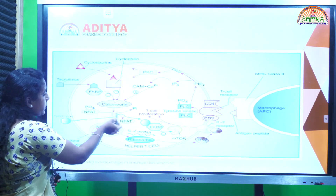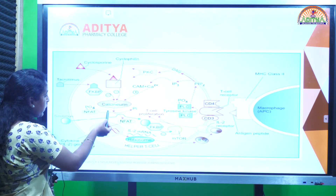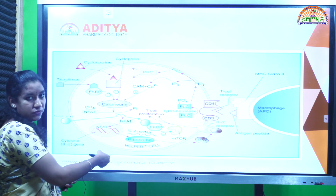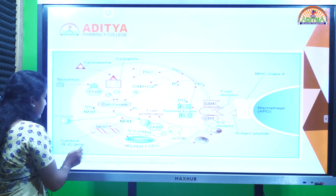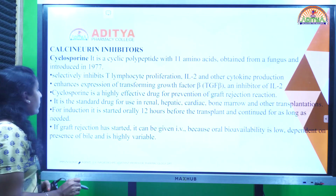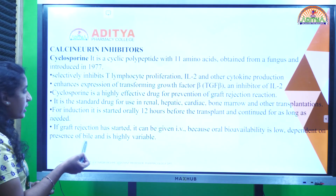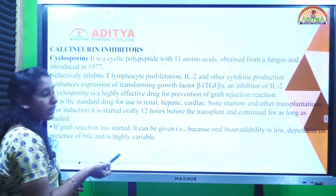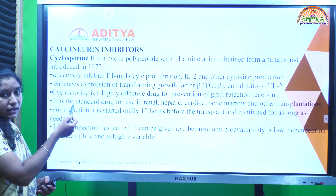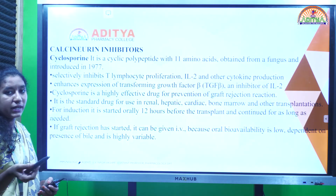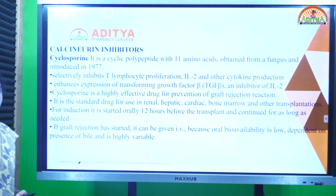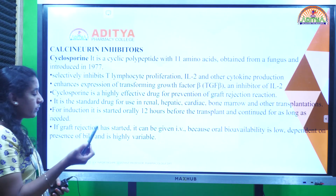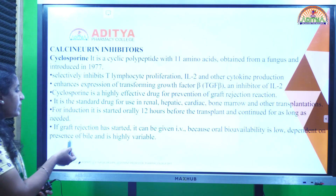Cyclosporine is highly effective for graft rejection and is the standard drug used in transplantations including renal, hepatic, heart, and bone marrow transplantation. For induction, it has to be started orally 12 hours before transplantation. If graft rejection has started, it must be given intravenously because oral bioavailability is very low, which occurs due to the presence of bile and is highly variable.